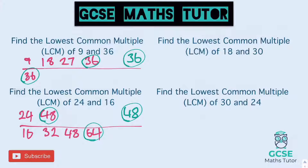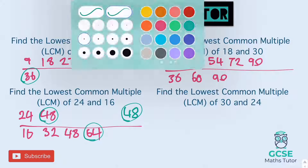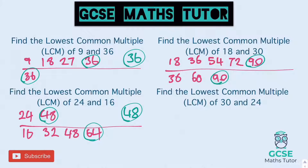So 18 and 30. I know that 30 is going to always end in a zero, so let's look at 18: 18, 36, 54, 72, 90. And if we do a couple of 30s: 30, 60, 90. There is our lowest common multiple of 18 and 30 — the answer is 90.